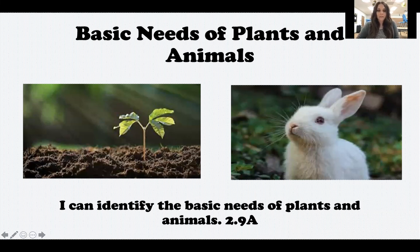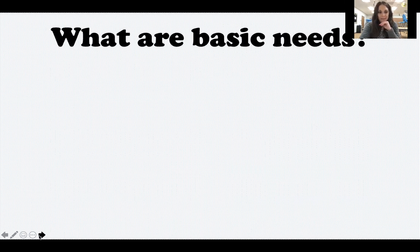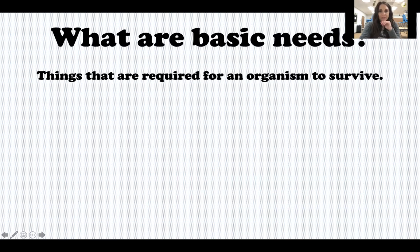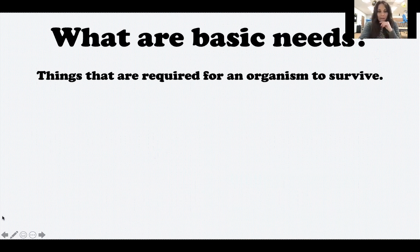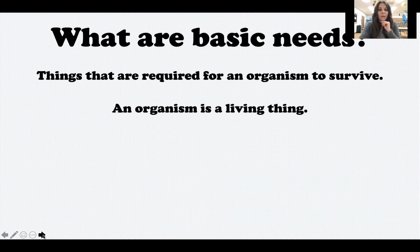Your target says: I can identify the basic needs of plants and animals. Let's start out by making sure we understand what the phrase 'basic needs' means. Basic needs are things that are required for an organism to survive — things that organisms must have in order to survive. An organism is any living thing.